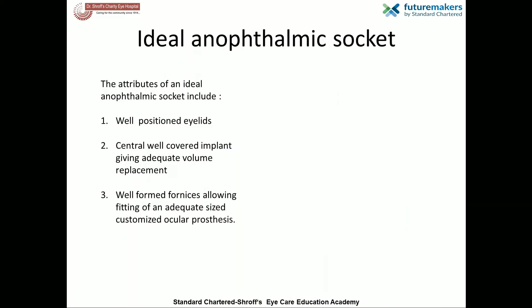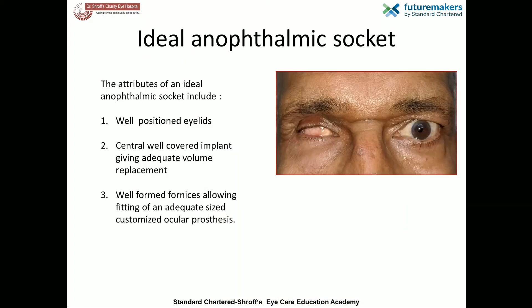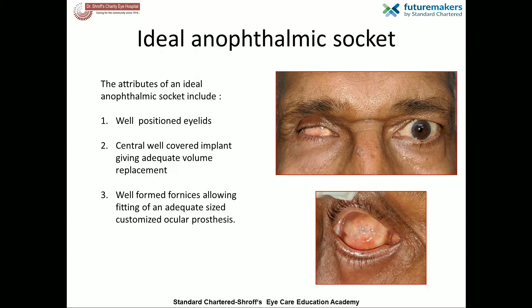An ideal anophthalmic socket is described as one with well-positioned eyelids, with a central well-covered implant providing adequate volume replacement, and well-formed fornices allowing fitting of an adequate size customized ocular prosthesis.